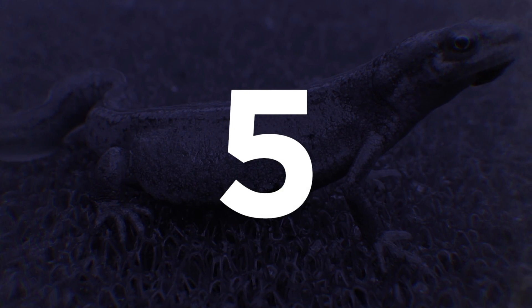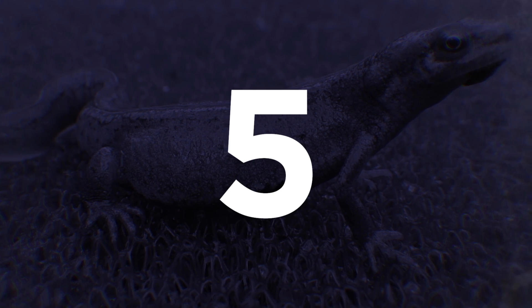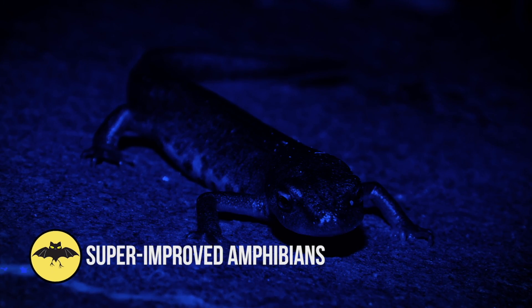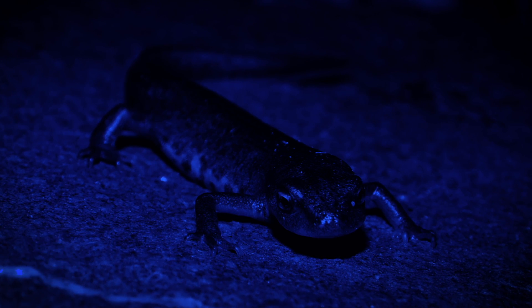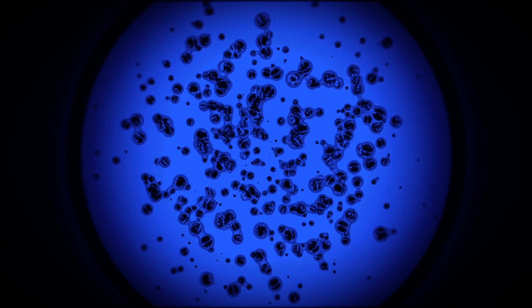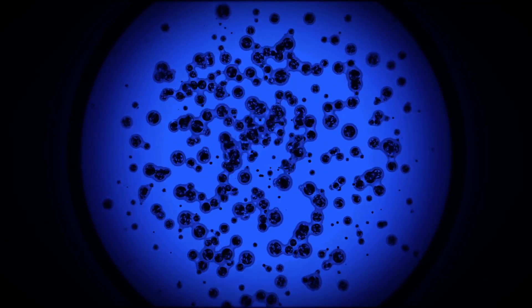Number 5. Super Improved Amphibians. The Iberian Rib Newt is a variety of salamander native to the Iberian Peninsula and Morocco. In fact, it is the largest newt species in Europe. But the interesting thing is that its cell regeneration works very quickly.